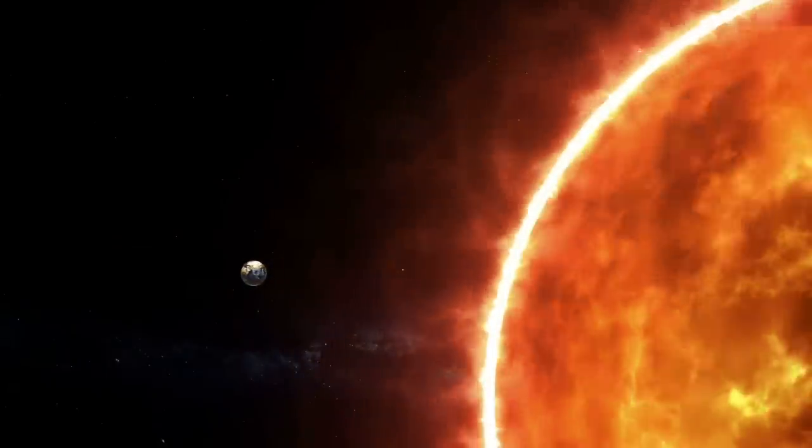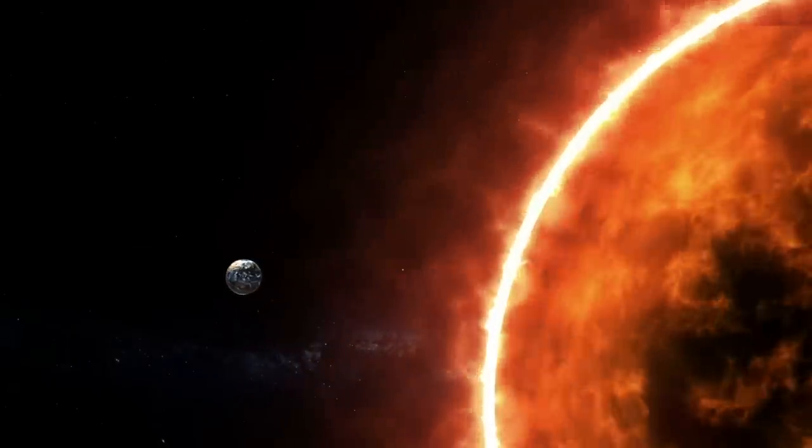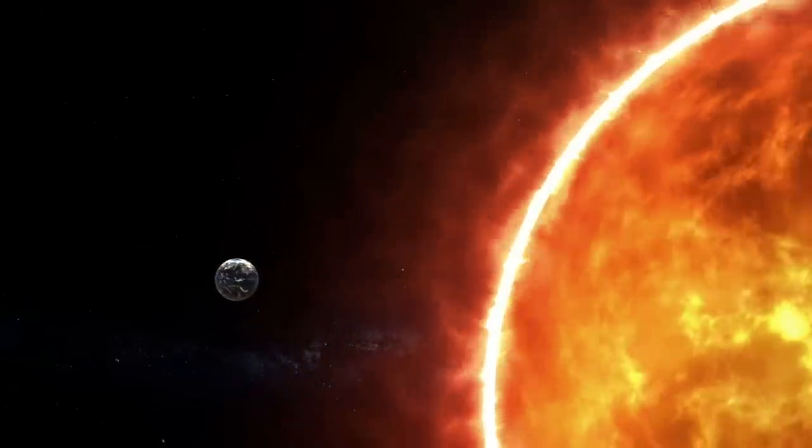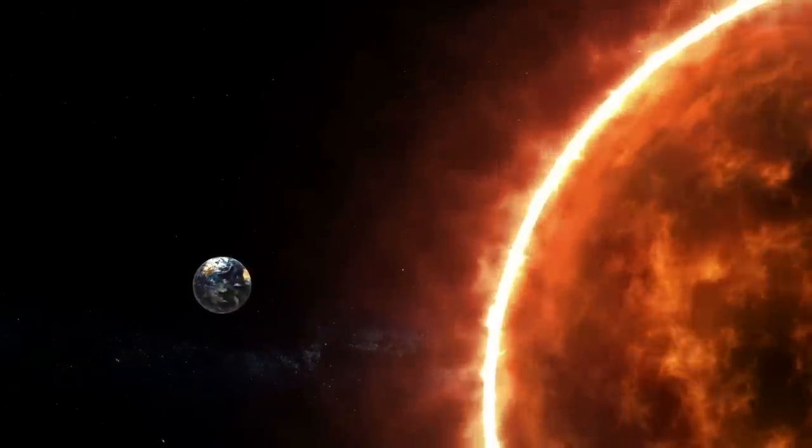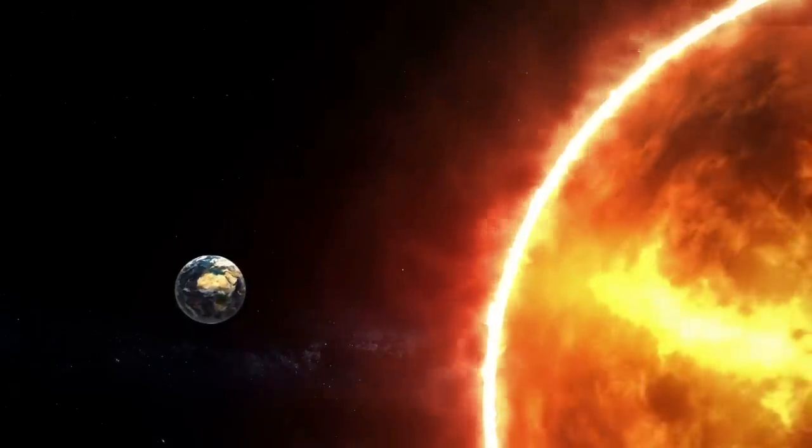This giant is responsible for holding the solar system together. Scientists have said the sun is around 110 times the diameter of the Earth. This means that over 1 million Earths could fit inside the sun.